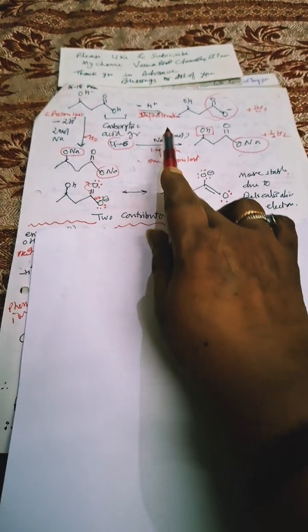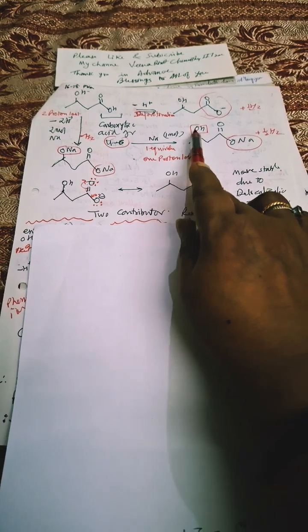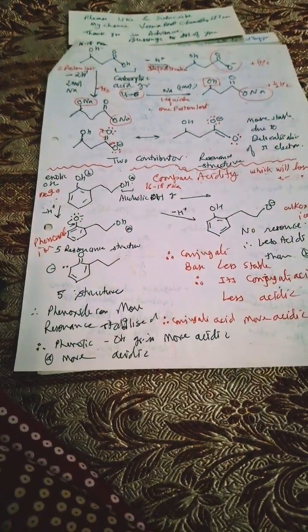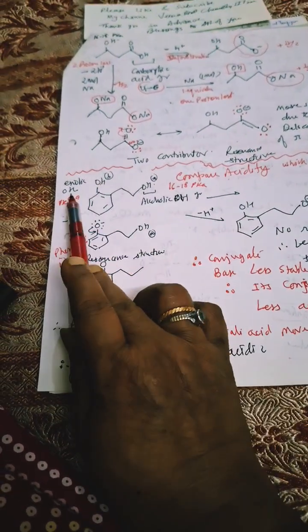When one H+ is replaced, one proton is lost, OH will remain as such here. COONa will be obtained. Now second case: here phenolic group is there and alcoholic group is there.